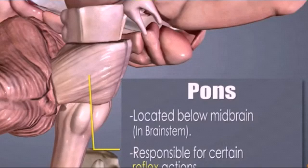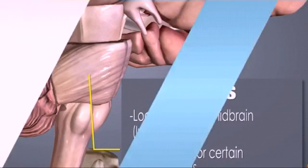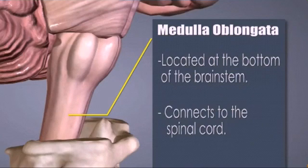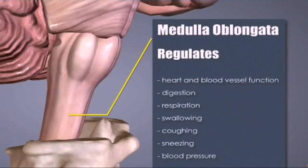The final part of the brain is the medulla oblongata. Medulla oblongata continues out of the brain as the spinal cord. The brain stem is formed by the midbrain, pons, and medulla oblongata.